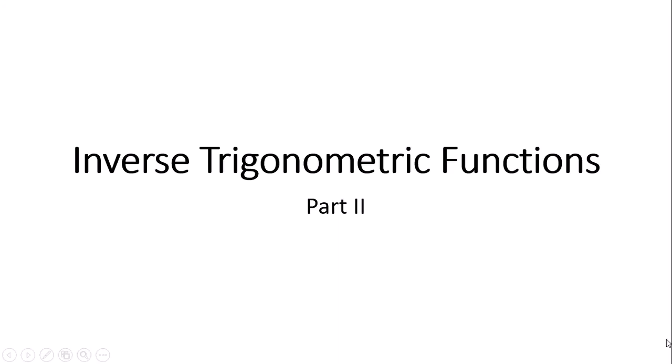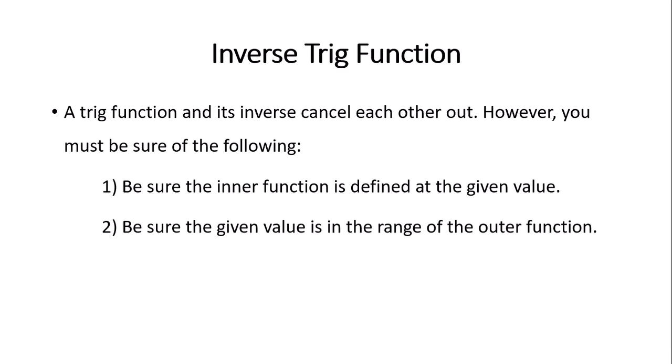We're going to continue talking about inverse trig functions. In particular, a trig function and its inverse cancel each other out. However, the following two conditions must hold before you can do this: first, the innermost function must be defined at the given value; second, the given value must be in the range of the outer function. These are the two conditions we will check before canceling out a trig function and its inverse.